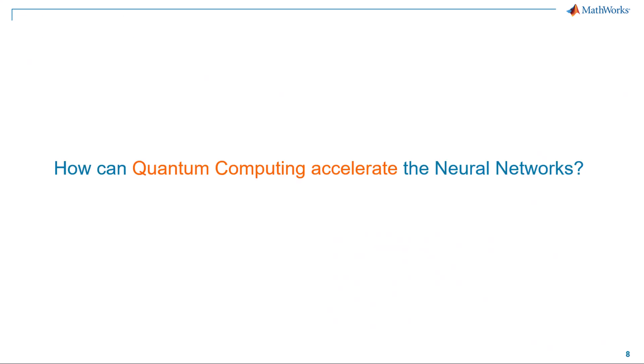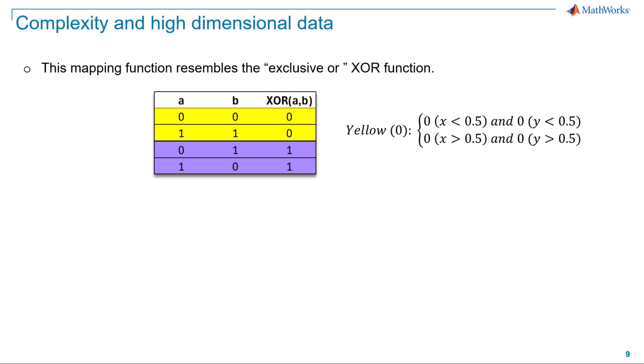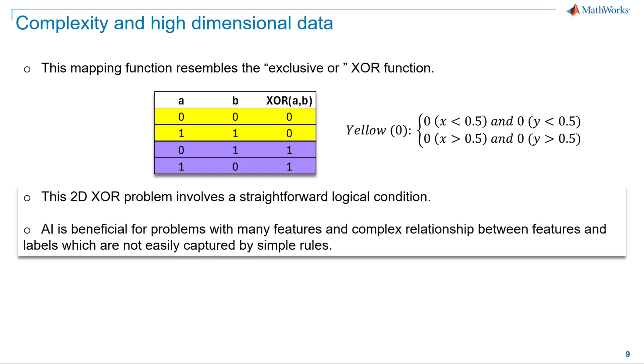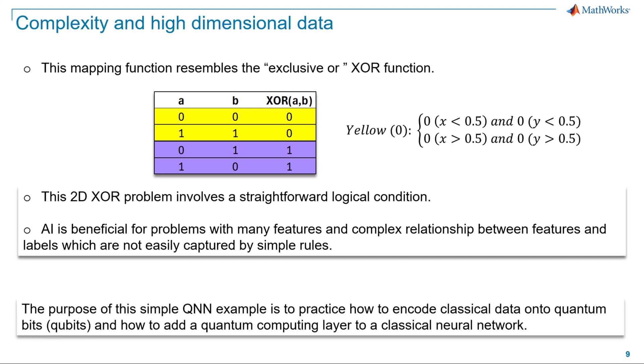Before we jump on quantum neural networks, let us see how quantum computing accelerates neural networks. The generated dataset we just saw uses a mapping function similar to the exclusive OR function. Solving an XOR problem for two-dimensional data is straightforward. In general, AI is beneficial for problems with many features and complex relationships between features and labels, which are not easily captured by simple tools. The purpose of this simple neural network example is not to use quantum computing on an otherwise unsolvable problem. Instead, the goal is to practice encoding classical data onto qubits and integrating a quantum layer into a classical neural network.